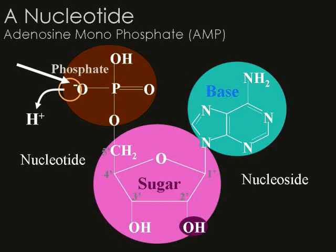Here's a diagram of a nucleotide. Notice how everything is connected to the sugar in the middle — the sugar is deoxyribose. Also connected to it is a nitrogen base; this one is adenosine, which has two rings. And then also your phosphoric acid. If you take away the phosphoric acid, you don't have a nucleotide — you have what's called a nucleoside.